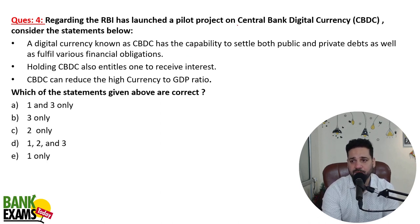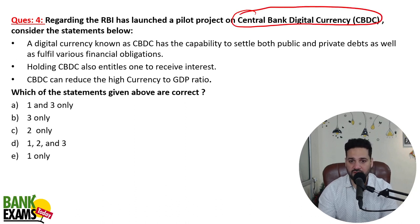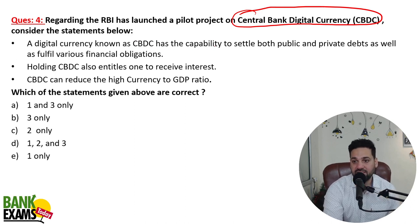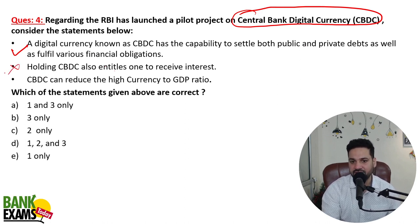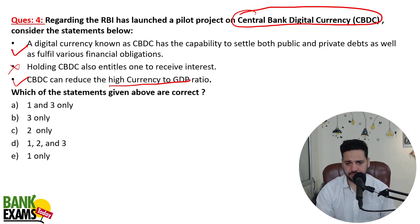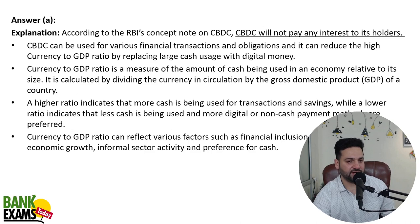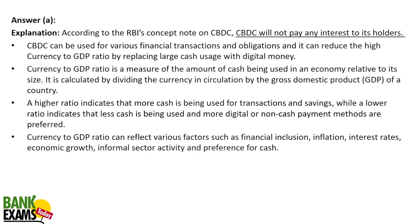The RBI has launched a pilot project on Central Bank Digital Currency (CBDC). Regarding CBDC: a digital currency known as CBDC has the capability to settle both public and private debts as well as fulfill various financial obligations — this is correct. However, holding CBDC does not entitle one to receive interest — you will not receive interest on CBDC. CBDC can also reduce the high currency-to-GDP ratio, as less currency in circulation is required. Therefore, statements one and three are correct; statement two is not correct.